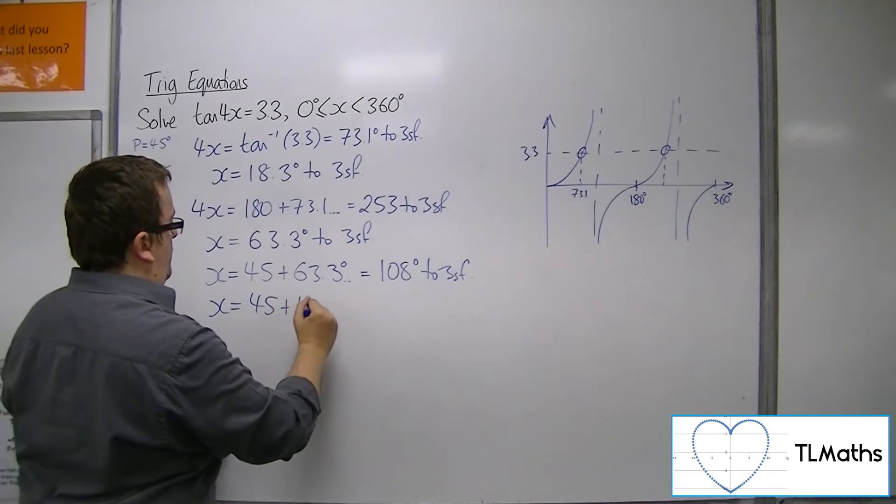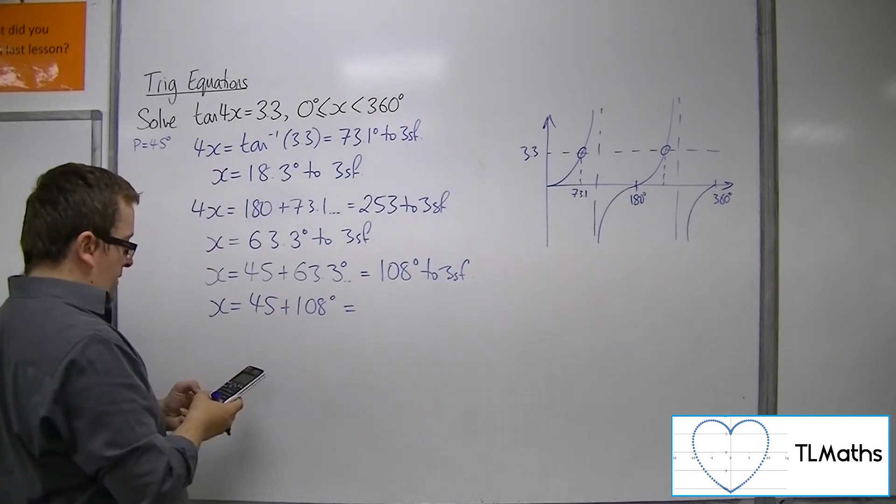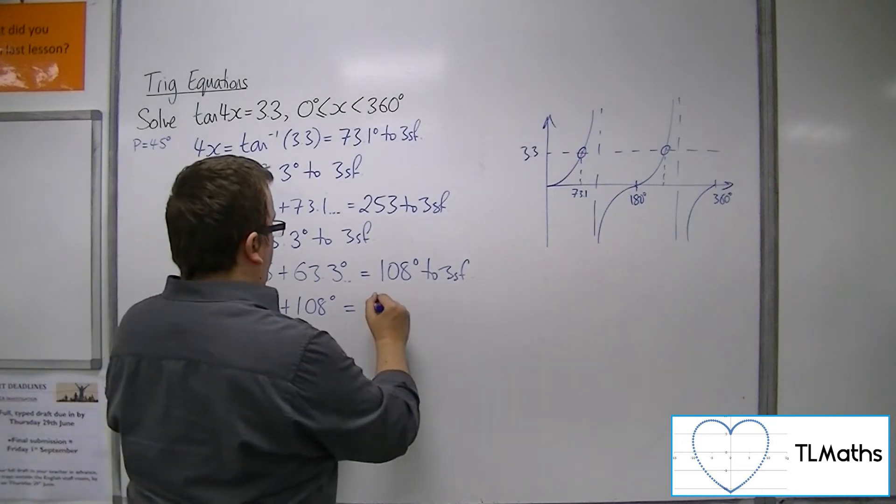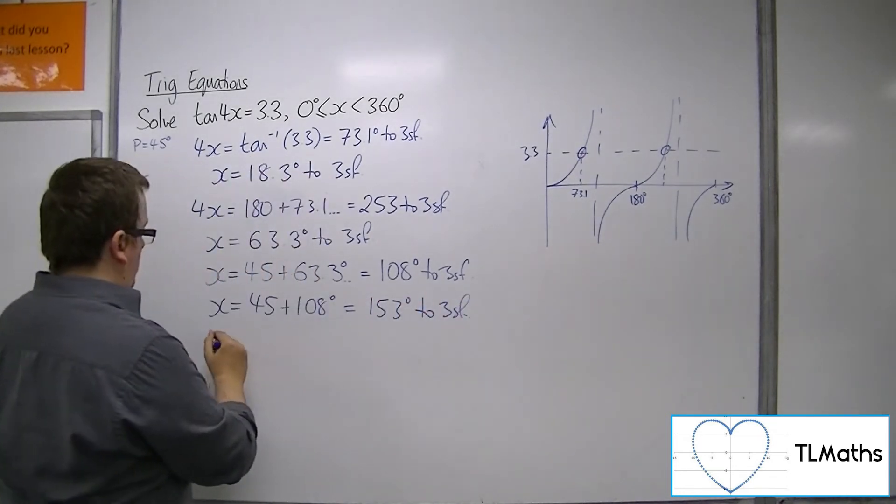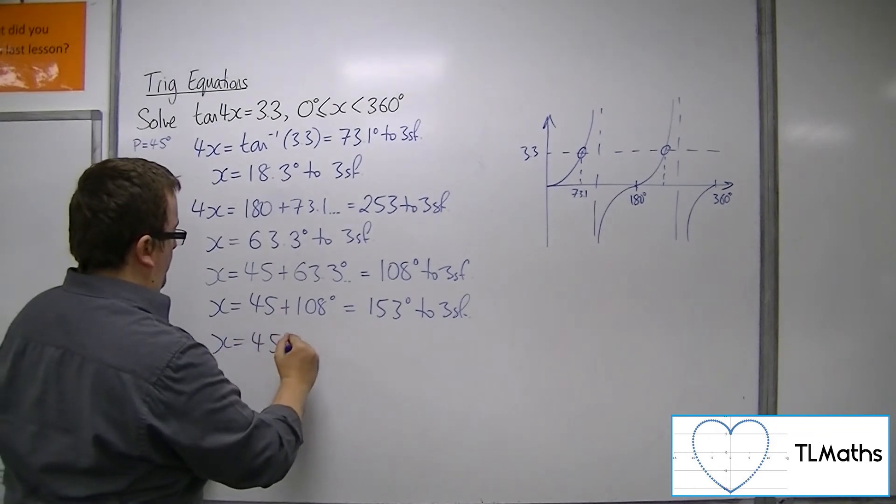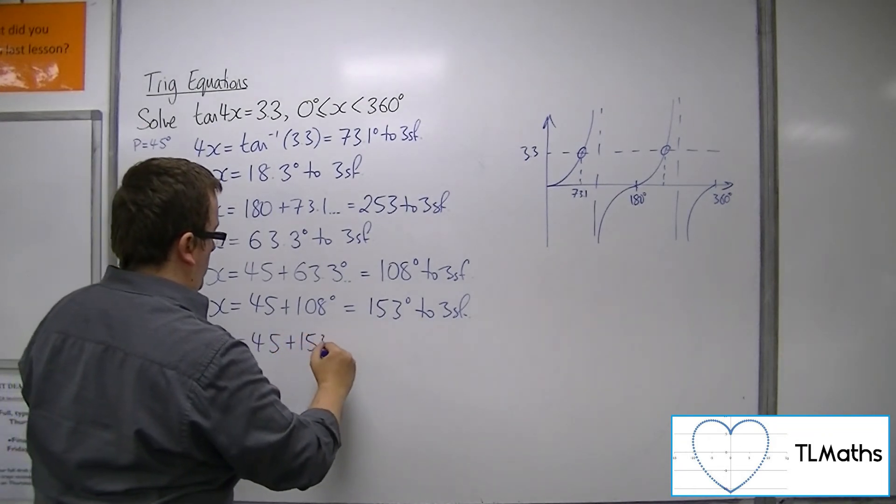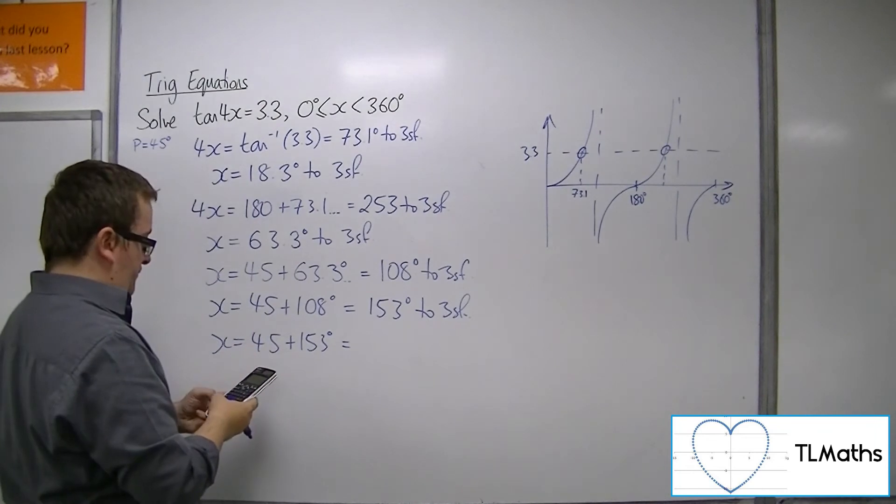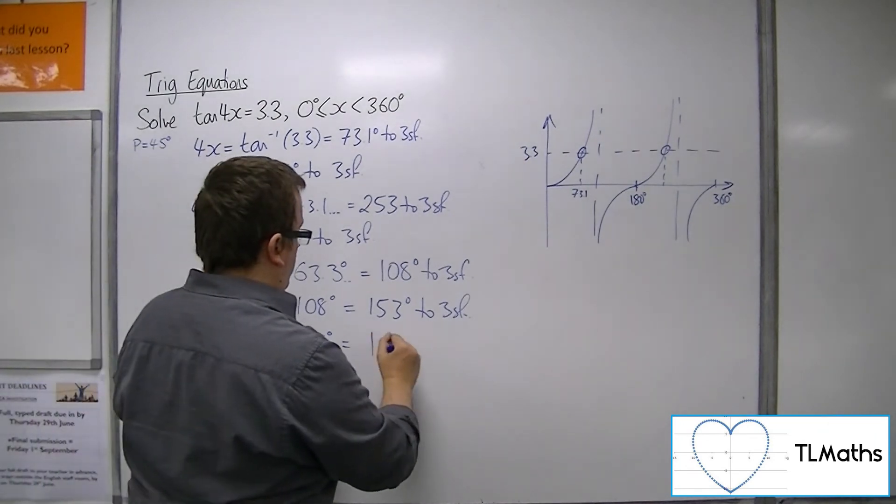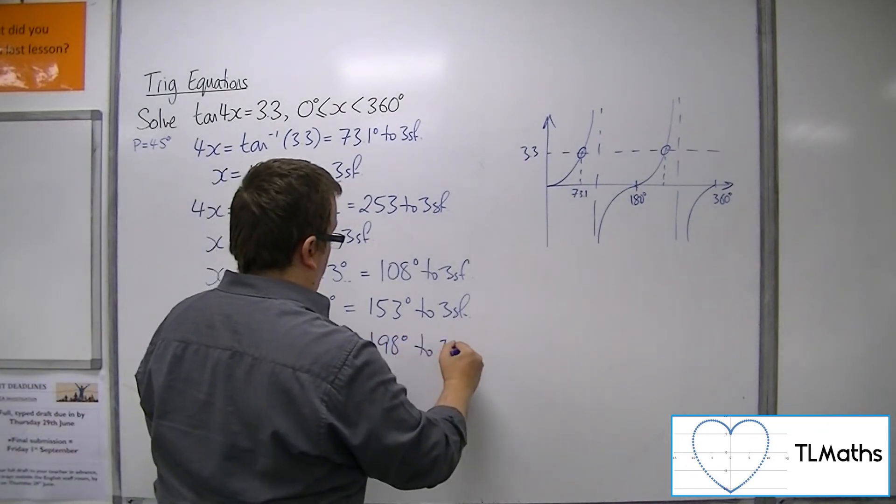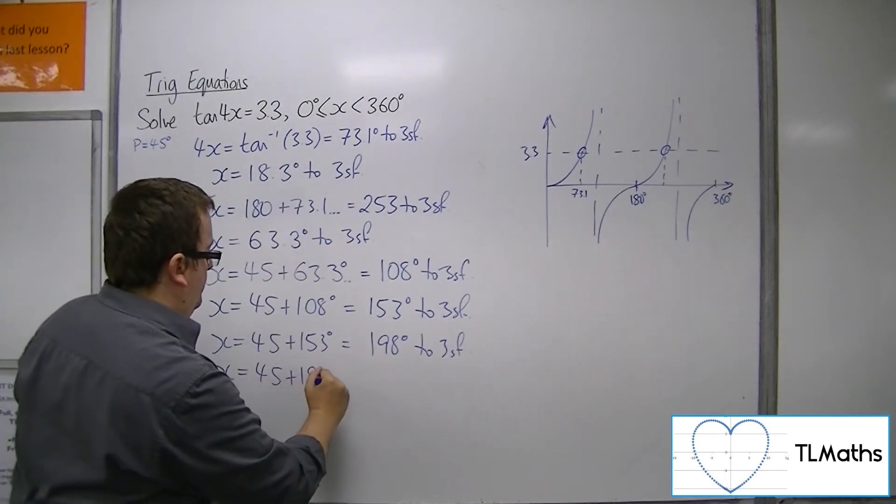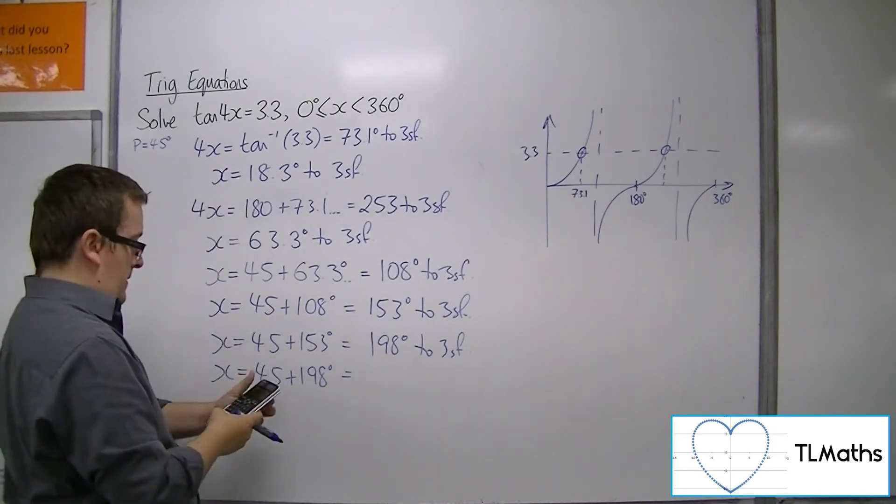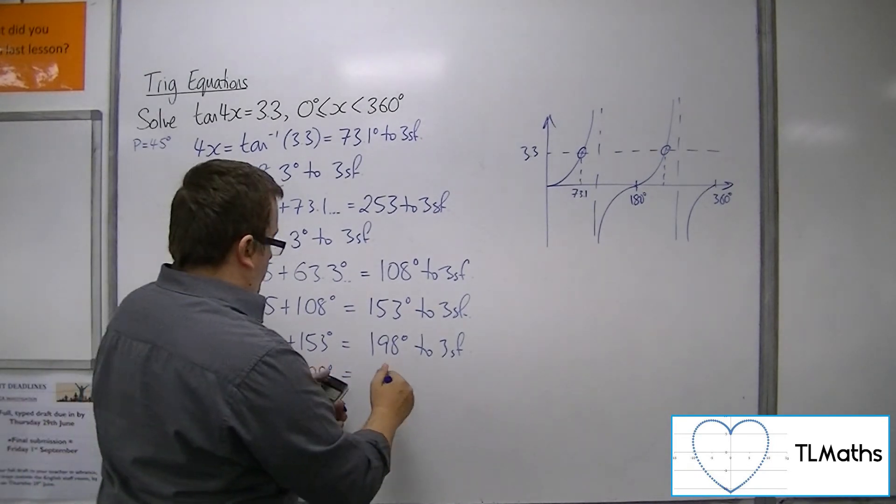Then add on another 45. We can get 153. And add on 45. 198. I guess I could do this without the calculator, but you know, long day. 243.